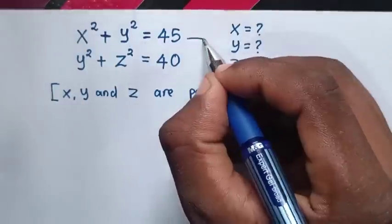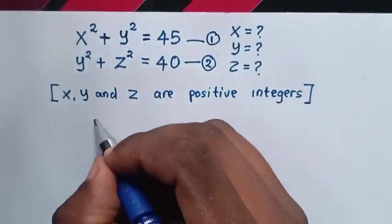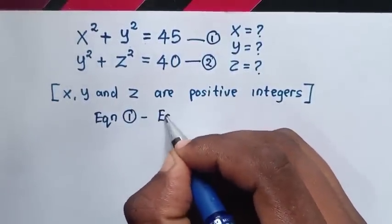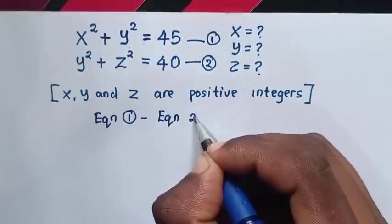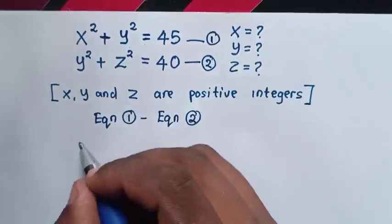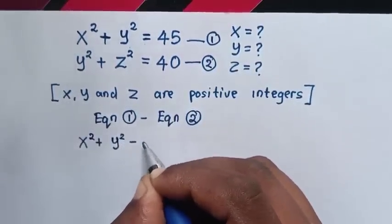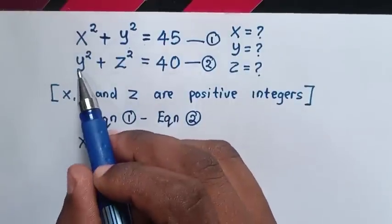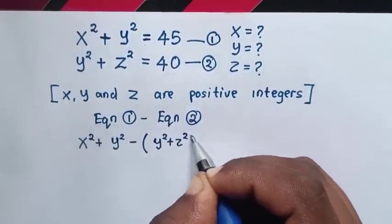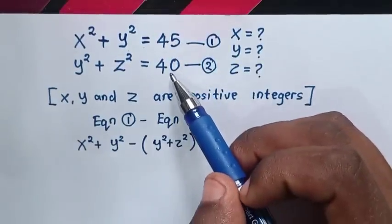So first, let this be equation 1 and this be equation 2. Then, from equation 1 minus equation 2: from equation 1 the left side is x squared plus y squared, minus equation 2 the left side y squared plus z squared, is equal to on the right side 45 minus 40.